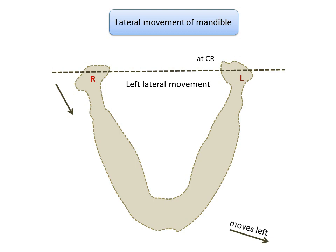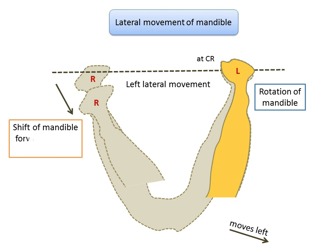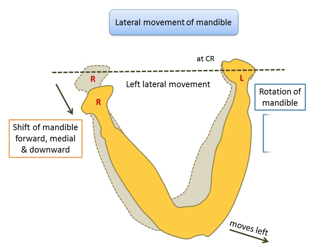Consider the mandible moving towards the left side. The working condyle — in this case, the left condyle — exhibits rotational movement, whereas the right condyle, the non-working condyle, exhibits a shift towards the forward, medial, and downward direction. The non-working condyle moves along an arc determined by the entoglenoid process of the glenoid fossa. The left condyle is the working condyle, exhibiting rotation, and is termed the rotating, working, or laterotusive condyle.